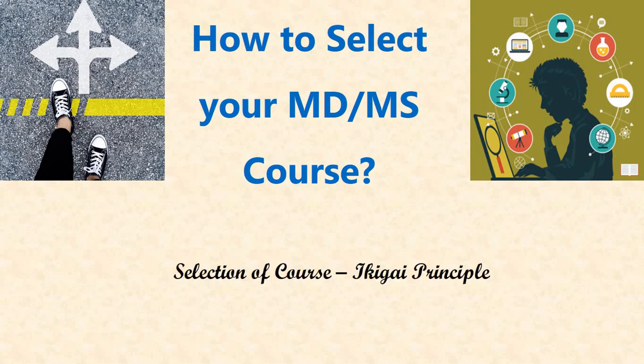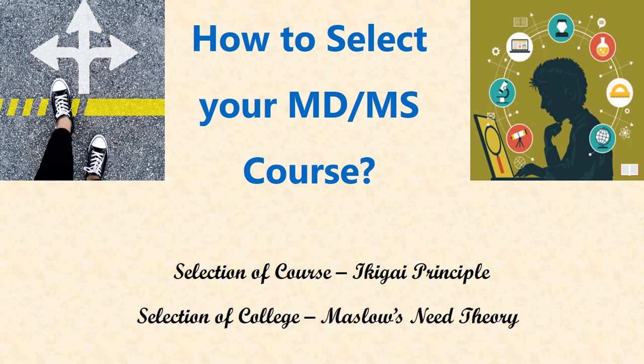The selection process has two parts: the selection of the course and the selection of college. I am going to use the Ikigai principle for selection of course and Maslow's needs theory for selection of college.